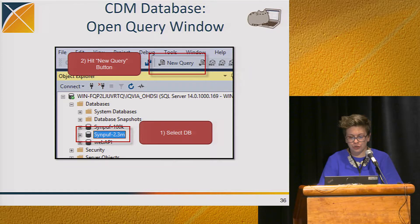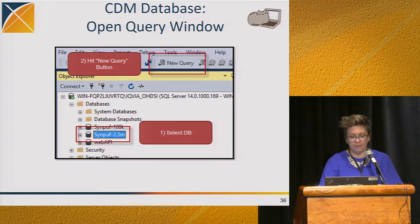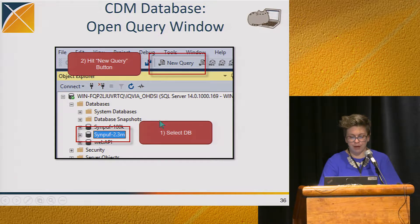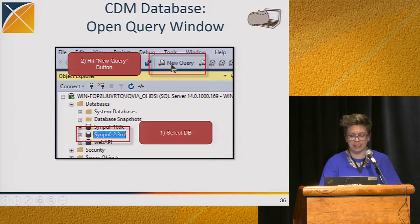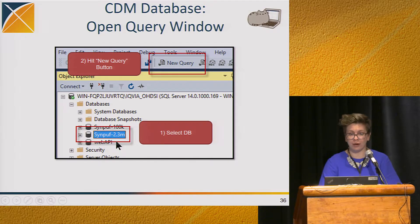When you open up SQL Server Management Studio and you've connected, on the left-hand side there's a drop-down for databases. If you open the databases folder, you should see something called Simpuff-2.3 million. This is the simulated data set. Select it so that it's highlighted, then press the New Query button at the top of the window to open a query window that will run off of that database.